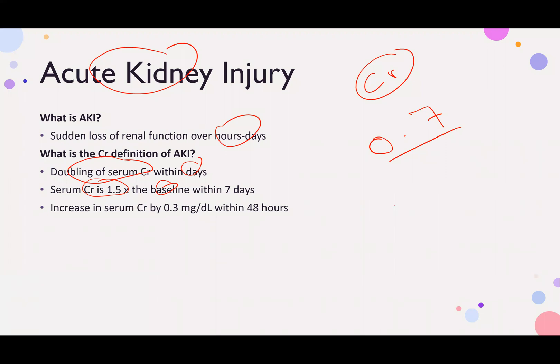The baseline for the patient — if you have AKI and the baseline is 0.7 — will be 0.7 multiplied by 1.5. So 1.5 times the baseline. Or the serum creatinine rises by 0.3 mg/dL within two days, or over 48 hours.